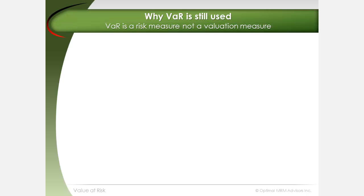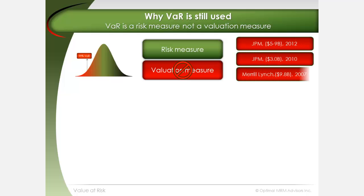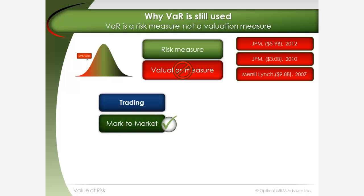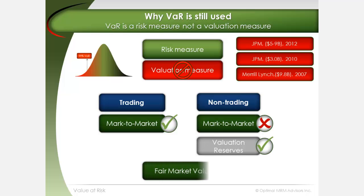VAR measures the potential loss or change in the market value or fair value of a portfolio. VAR does not measure the risk of loss from investment positions being incorrectly valued. A number of headline losses in recent history were due to positions being incorrectly valued. The implicit assumption behind VAR, and any other risk measure, is that base positions are correctly marked to market. For a book that is not marked to market and which uses VAR to measure risk, the implicit assumption is that there are adequate valuation reserves in place.